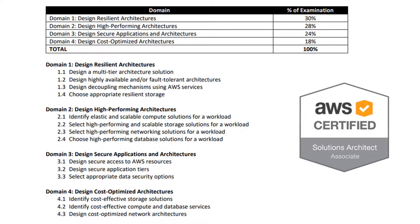Each of these domains are divided into various percentages — in other words, the questions will make up that percentage of the exam. Domain one will have 30% of the examination, domain two will cover 28%, domain three will have 24%, and domain four will have only 18% of the examination.